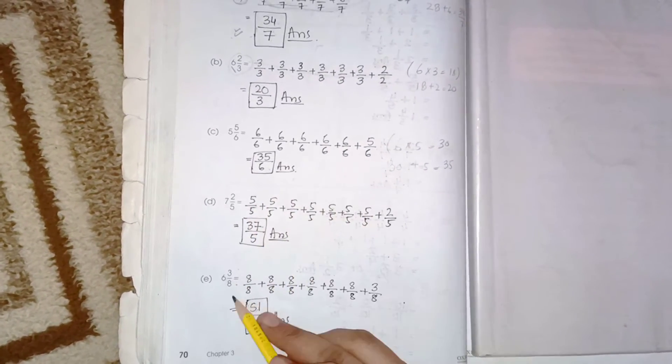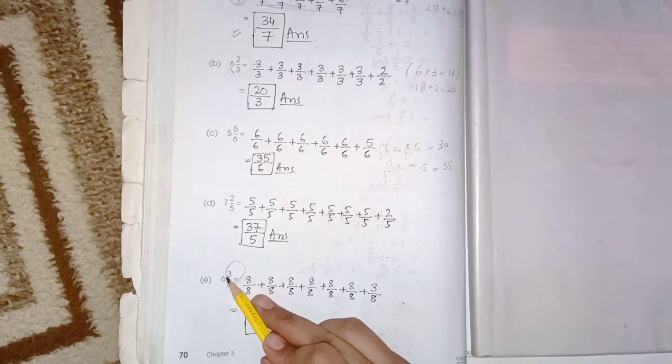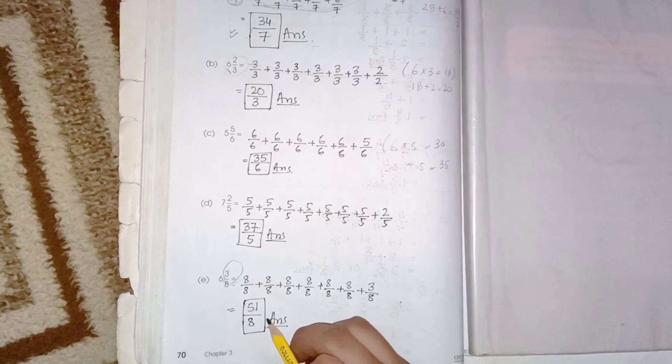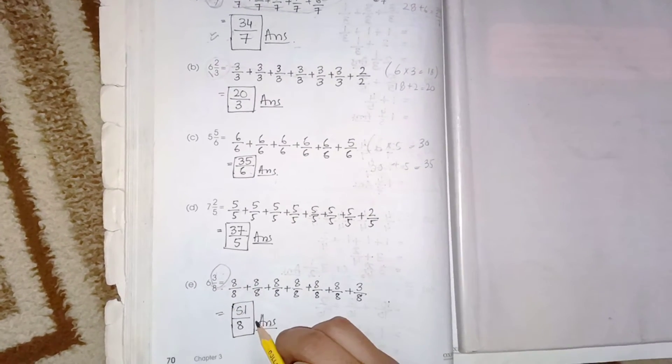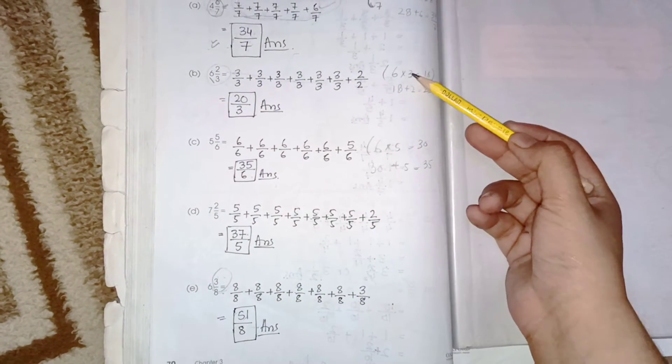This is the simple method: we don't need to break down the division. We just convert the mixed number to an improper fraction using multiplication and addition.